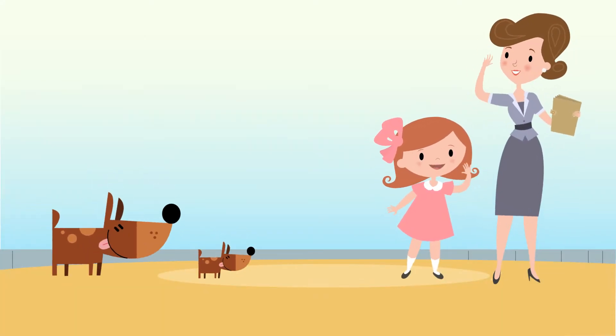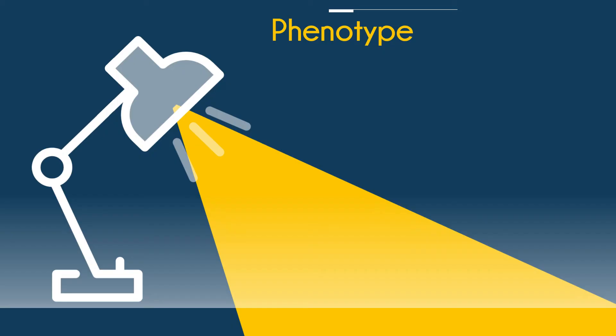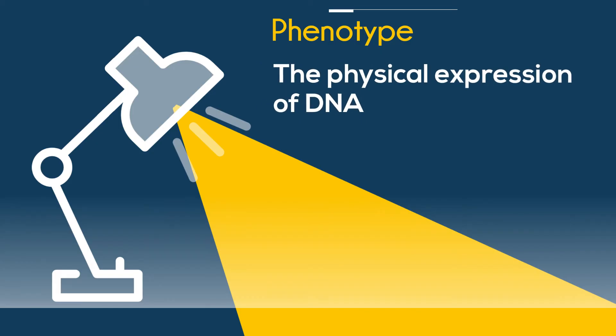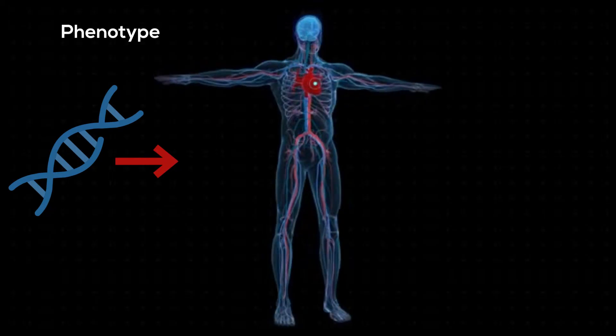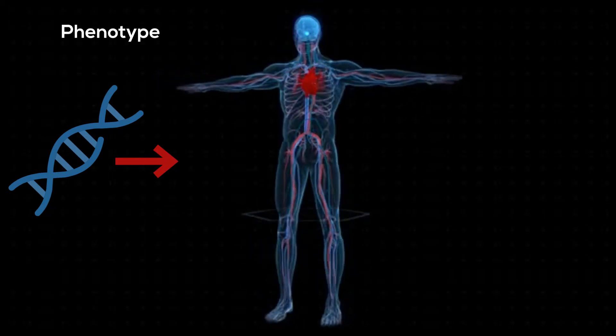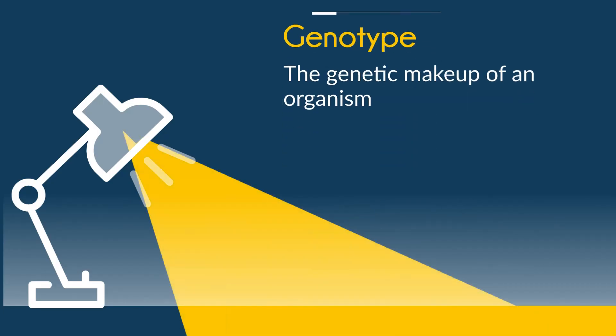Next, phenotype: the physical expression of DNA. And finally, genotype: the genetic makeup of an organism.